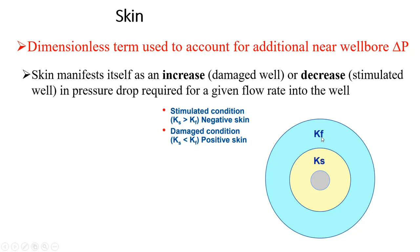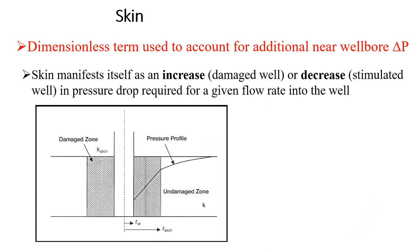If the well has been stimulated either by hydraulic fracture or acid treatment, it has increased the permeability of that particular zone. When the fluid gets into this zone, it flows faster. If the permeability of the skin is greater than the formation permeability, then we have a negative skin — the well has been stimulated. But if particles have blocked the pore spaces around this region, this region has been damaged because there is higher resistance to flow, reducing the permeability, and the fluid finds it difficult to flow within that particular zone.